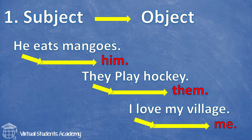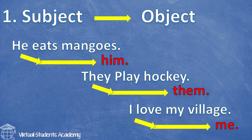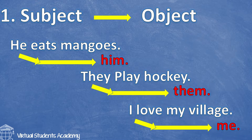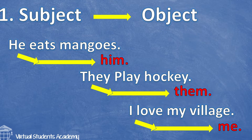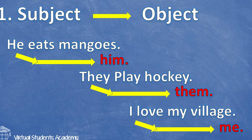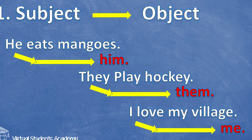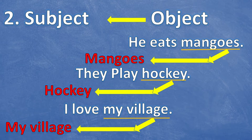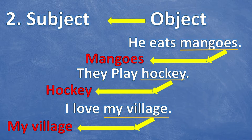Following rule number one: the subject moves to the object place according to the pronoun cases table. In 'He eats mangoes,' 'he' is the subject going to the object place, so 'he' changes into 'him.' In 'They play hockey,' 'they' changes into 'them.' In 'I love my village,' 'I' turns into 'me.'